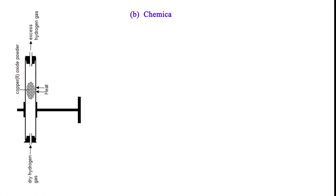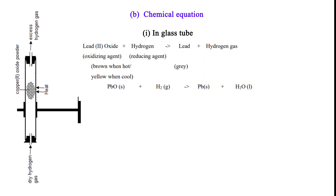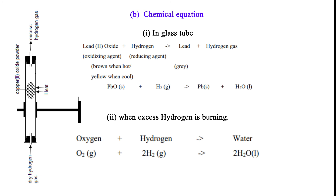B. Chemical equation. 1. In glass tube: lead(II) oxide plus hydrogen to lead plus water. 2. When excess hydrogen is burning: oxygen plus hydrogen to water.